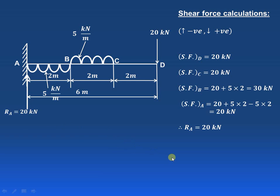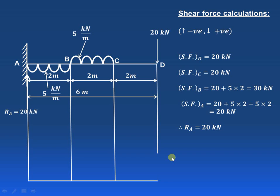Now let us draw the shear force diagram for this particular arrangement. This is the baseline. Shear force at D is 20 kN; at C it is also 20 kN; at point B it is 30 kN; and again at point A it is 20 kN. That will complete our shear force diagram.